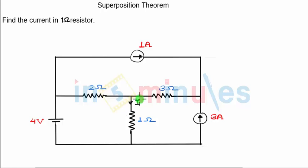In this case, there are three sources. The very first step, I will keep four volts voltage source active and we will replace one ampere and three ampere current source. How do you replace a current source? Current source is always replaced by an open circuit.